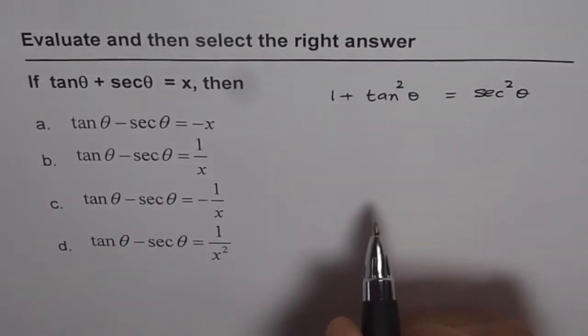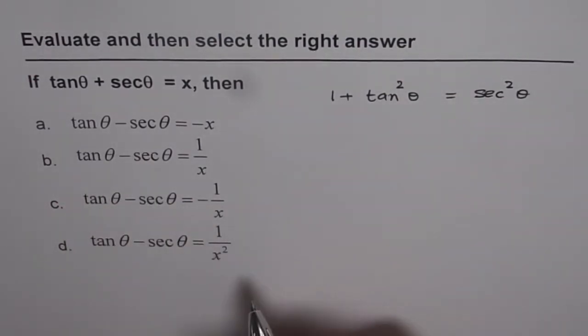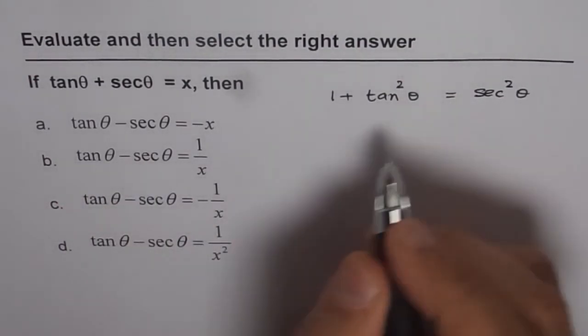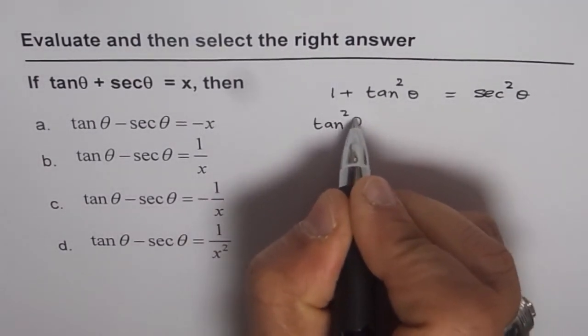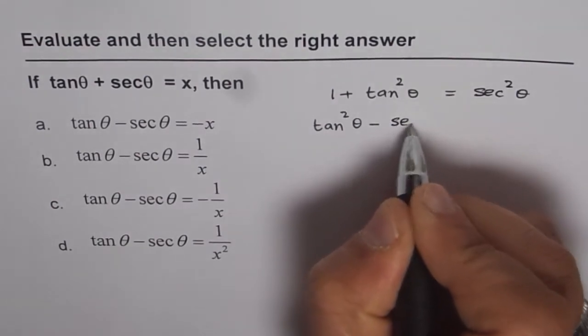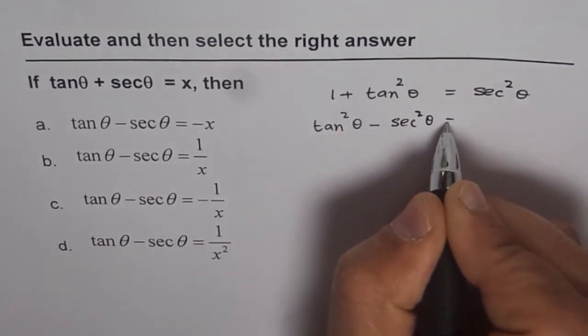We want to know what tan theta minus secant theta is, then we just rearrange this equation. So we get tan square theta minus secant square theta equals to 1.